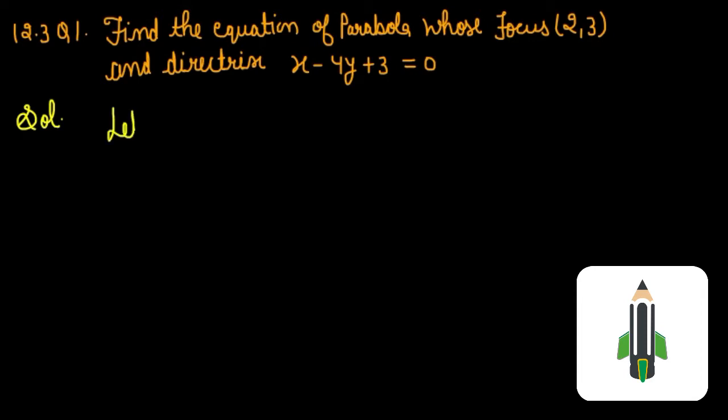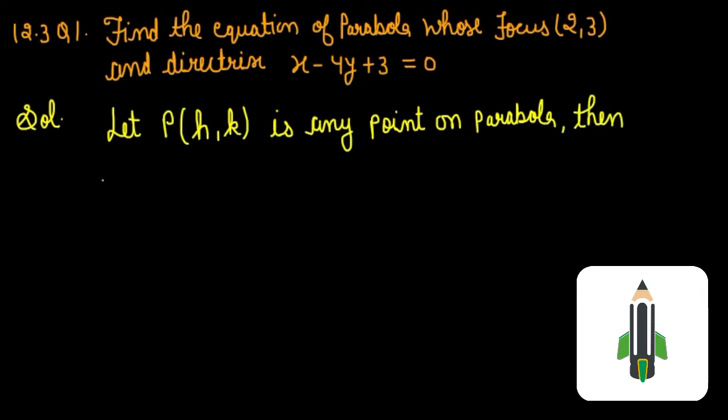To solve this, let P(h,k) be any point on the parabola. Then according to the parabola definition, SP = PM, or SP² = PM².